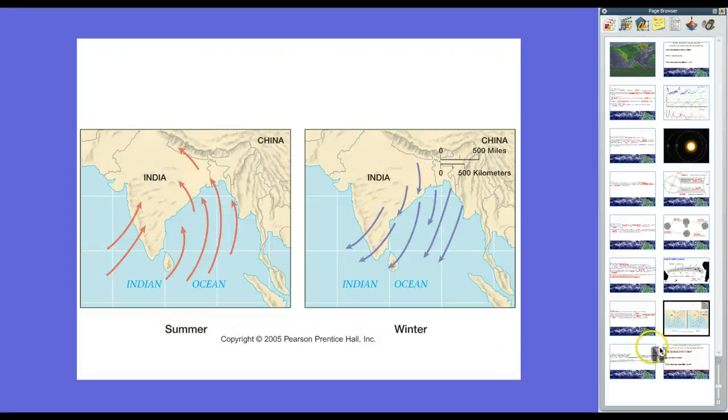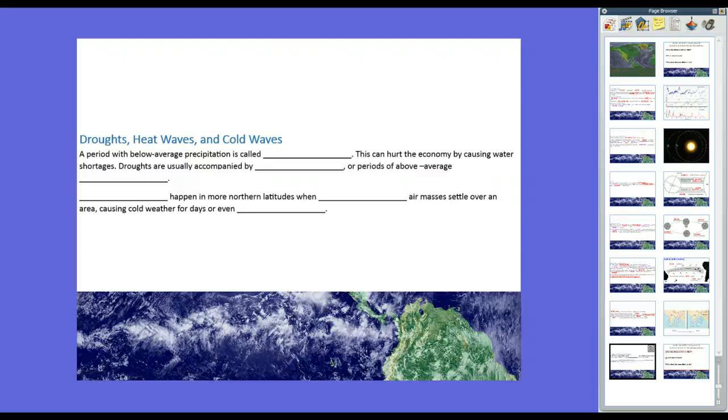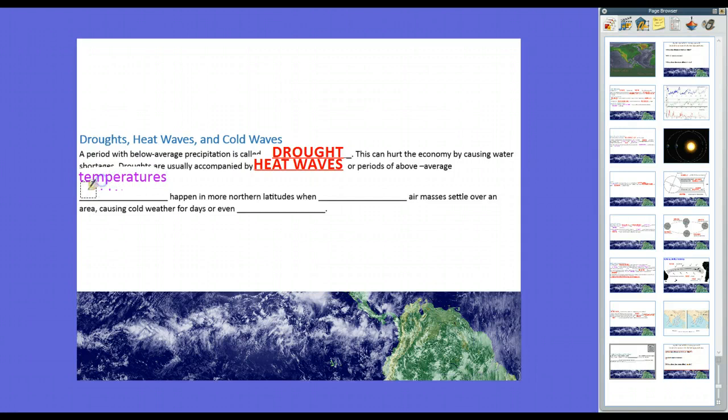The other climatic cycles are things with below average precipitation called drought. You don't get a lot of rain. You have a drought. And, this can hurt the economy by causing water shortages. Droughts are usually accompanied, especially in the summertime, by heat waves or periods of above average temperatures. In South Louisiana, we don't really have to worry about cold waves or cold snaps. That happens generally in northern latitudes when air masses that are cold and dry, continental polar air masses, settle over an area. They cause cold weather for days or even weeks, especially in colder northern latitudes.